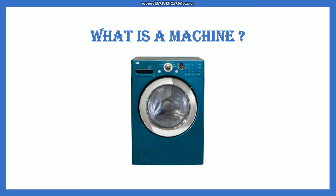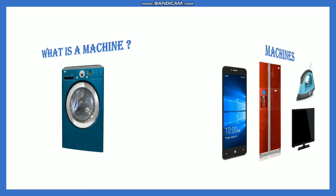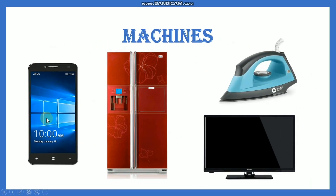Now we can just put the dirty clothes in a washing machine and the machine does all the hard work, making our life easier. We use different machines for doing different kinds of work. Some common machines are mobile phones, refrigerator, iron, and television.